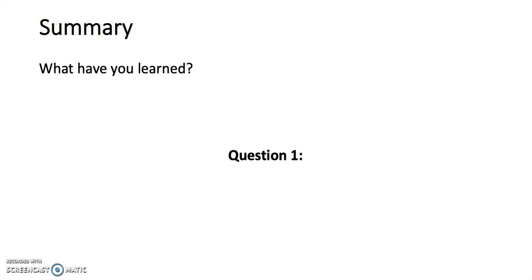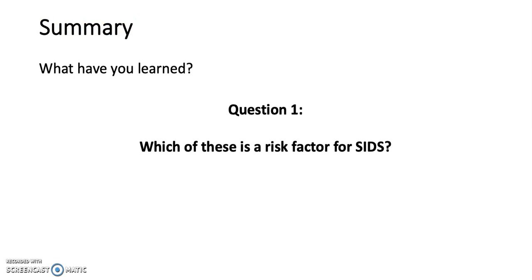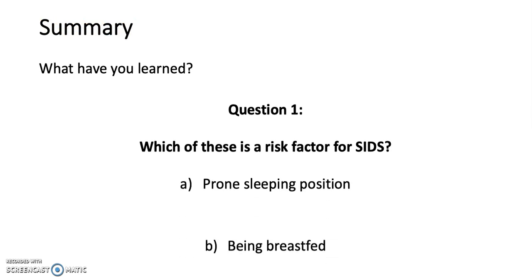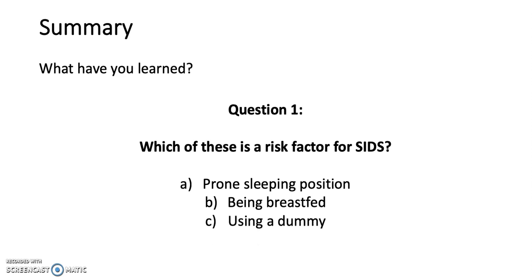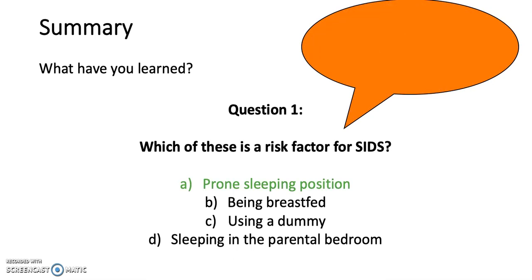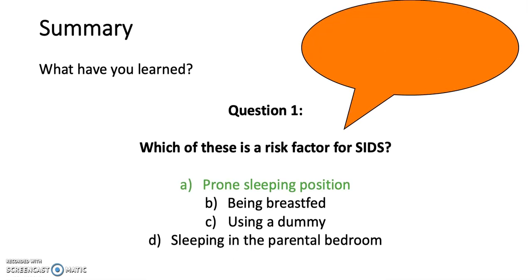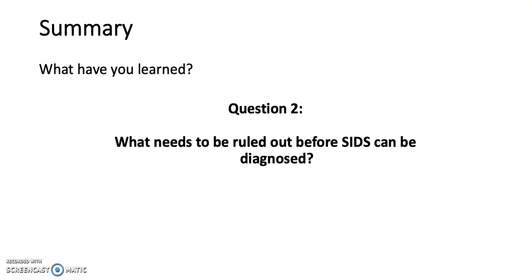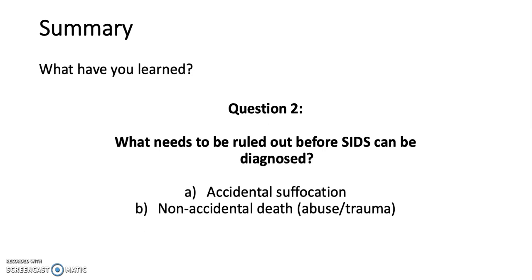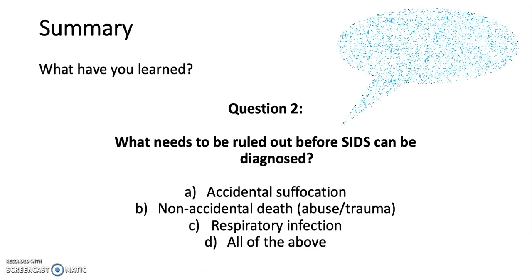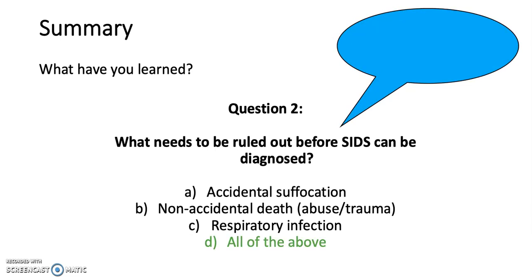In summary: Question 1 — Which of these is a risk factor for SIDS? The answer is A, prone sleeping position. Breastfeeding, using a dummy, and sleeping in the parental bedroom are all protective factors. Question 2 — What needs to be ruled out before SIDS can be diagnosed? The answer is D, all of the above: accidental suffocation, non-accidental death such as abuse or trauma, and respiratory infection.